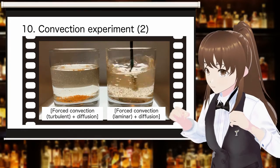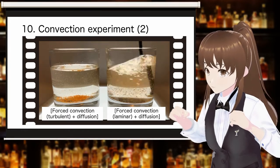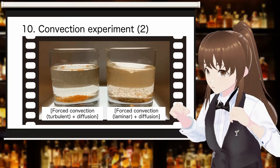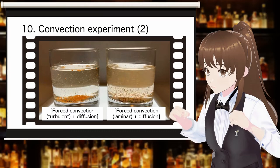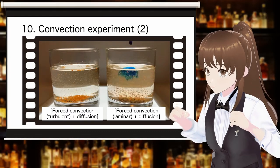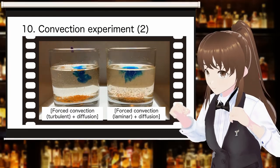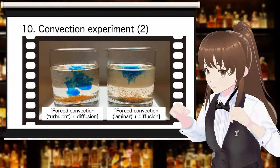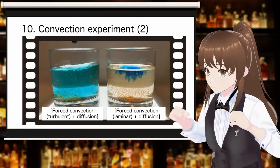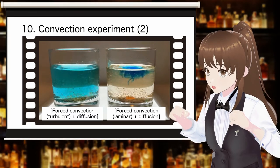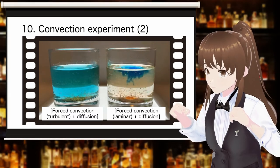Let us confirm the difference in mixing due to turbulence in the experiment. Unlike convection experiment 1, the glass on the turbulent side is stirred with a muddler after the food coloring is added. Since the muddler itself becomes an obstacle in the flow, turbulence is generated behind the muddler. This turbulence causes the food coloring to mix more quickly than in the previous experiment.